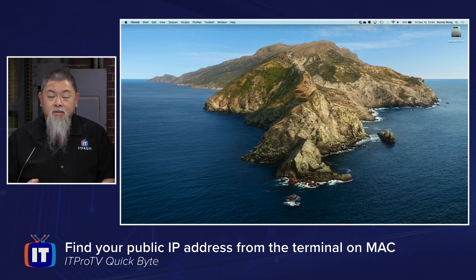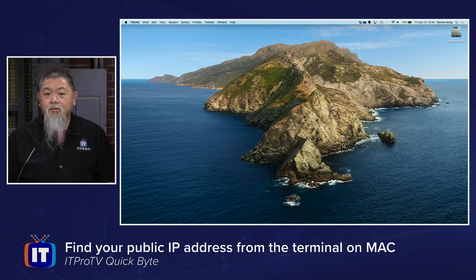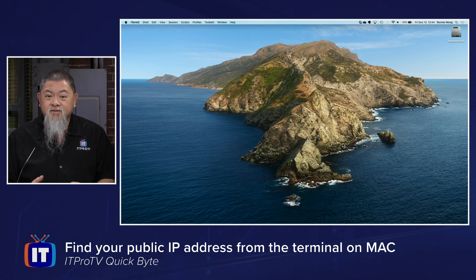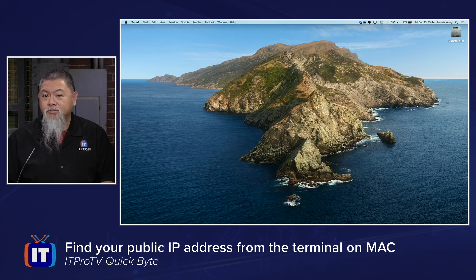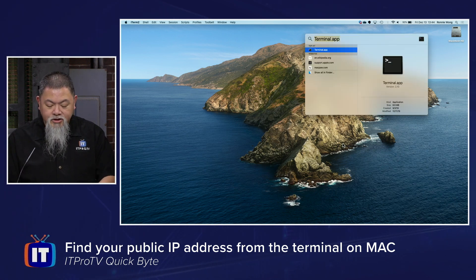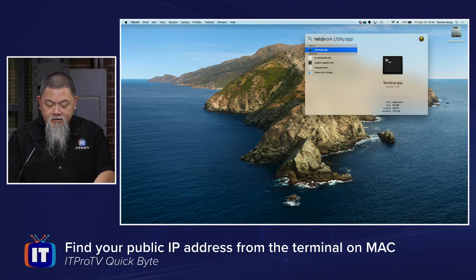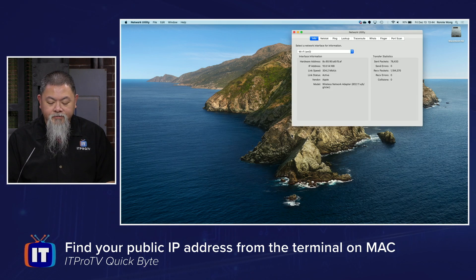Let's find the public IP address of the local area network that I'm actually on right now. You might think that it's fairly easy — we'll just go to our Network Utility app and figure out how that's done. I'm going to do Command+Shift and type in Network Utility app.